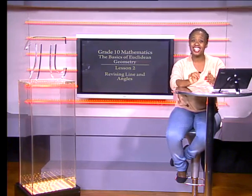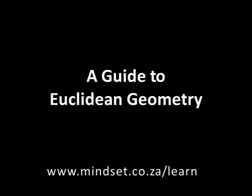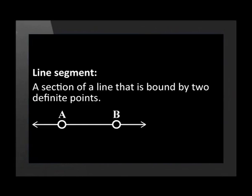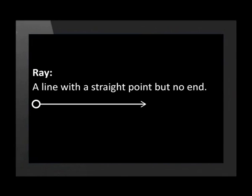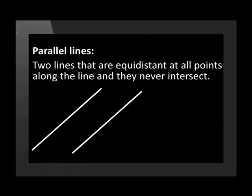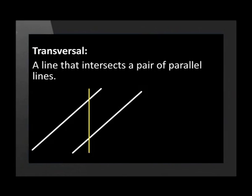Each term is also discussed in the series guide called 'A Guide to Euclidean Geometry.' Let's begin with the terminology for lines. A line segment is a section of a line that is bound by two definite points — it has a starting point and an end point; the parts beyond A and B are not included. A line with a starting point but no end is known as a ray — think of a ray of sunshine. Parallel lines are two lines that are equidistant at all points along the lines and they never intersect. A transversal is a line that cuts two parallel lines.